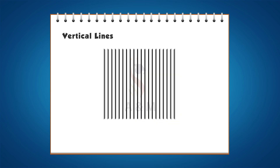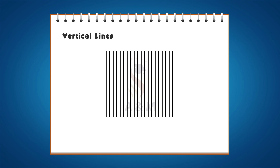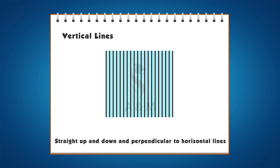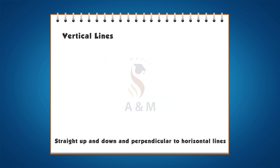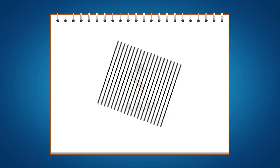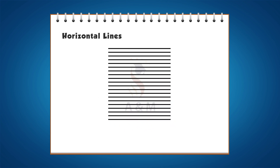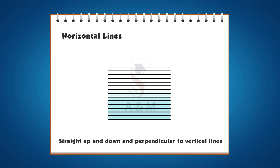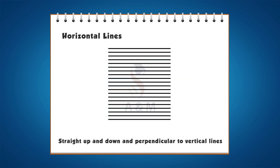First, vertical lines. Vertical lines are straight up and down and perpendicular to horizontal lines. Second, horizontal lines are straight side to side and perpendicular to vertical lines.